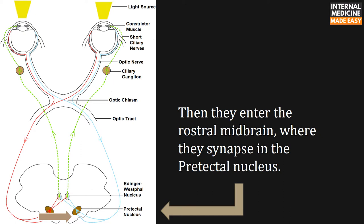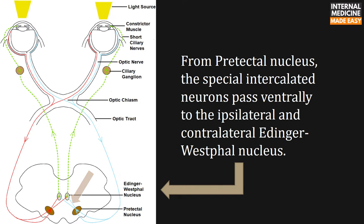Then they enter the rostral midbrain, where they synapse in the pretectal nucleus. From the pretectal nucleus, the intercalated neurons pass ventrally to the ipsilateral and contralateral Edinger-Westphal nucleus.